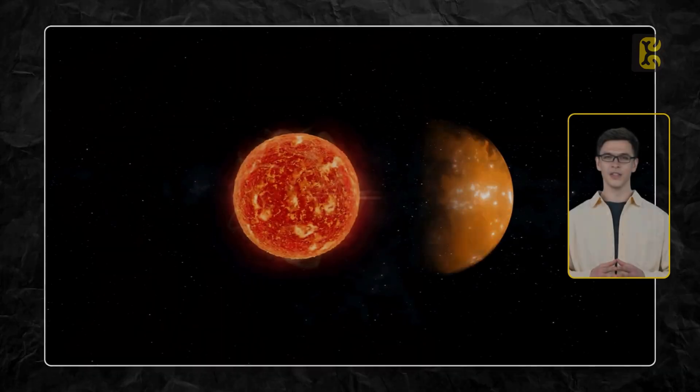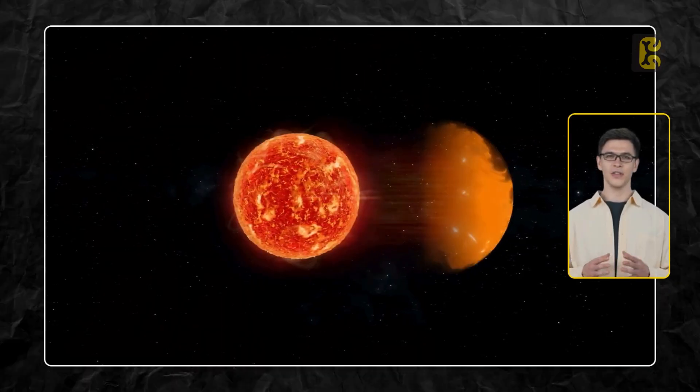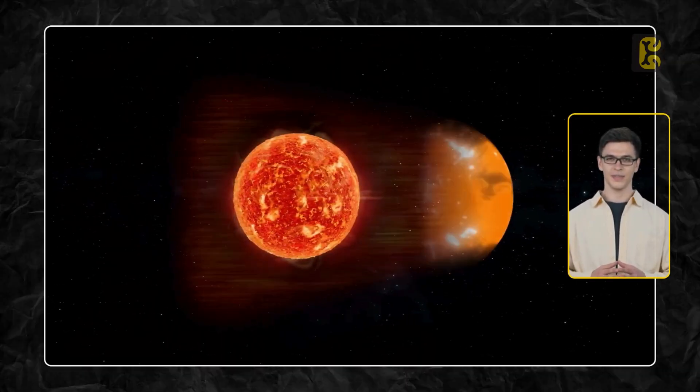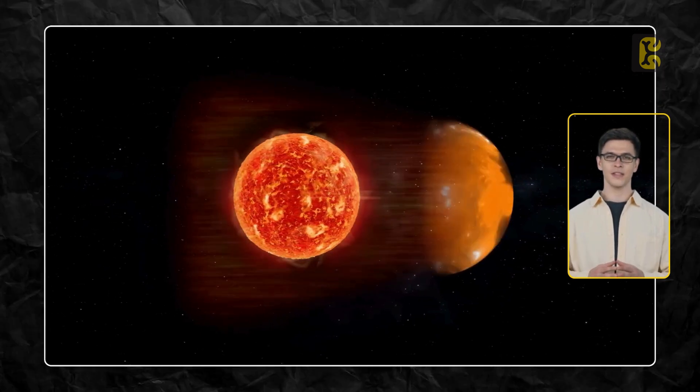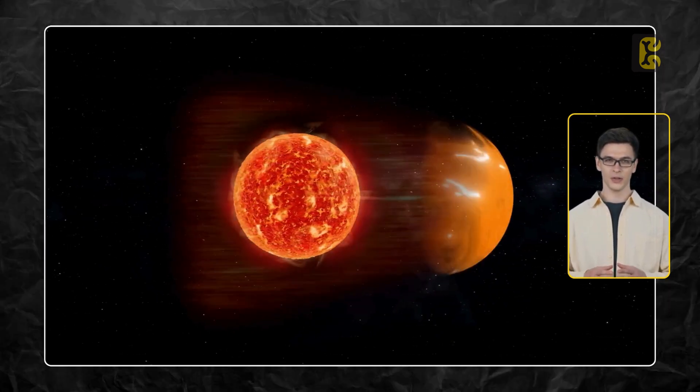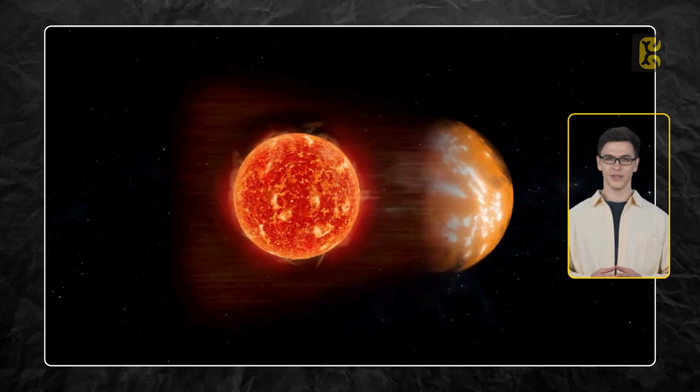Then sunlight would do the rest of the work. As soon as sunlight or photons hit these films installed far from the Sun, they would immediately reflect back towards the Sun, increasing the radiation pressure on the side of the Sun where the mirrors are installed.